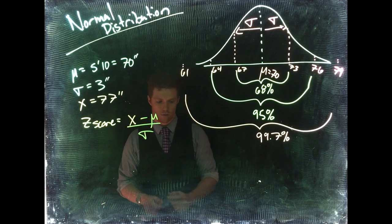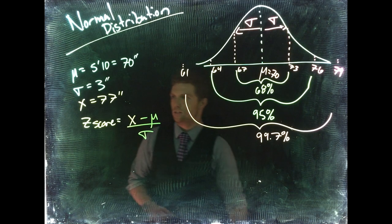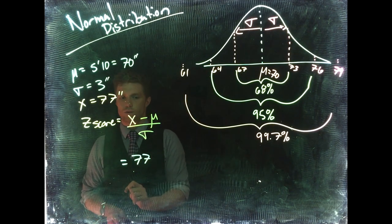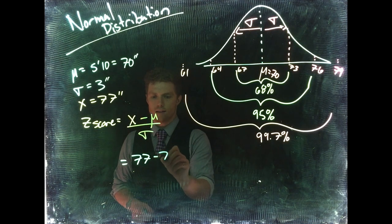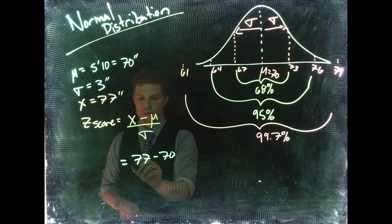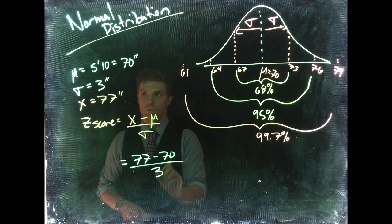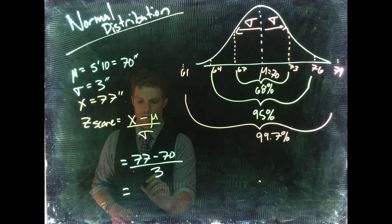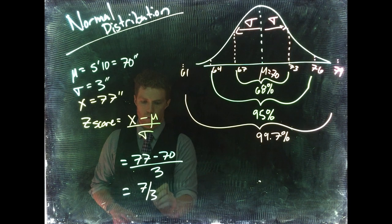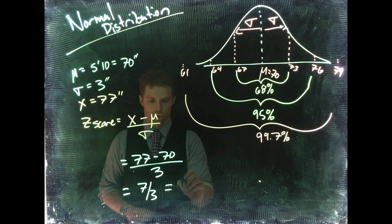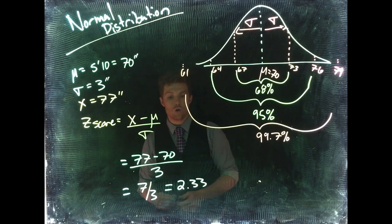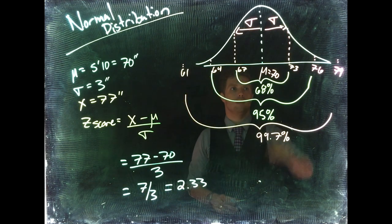The z-score tells us how many standard deviations away we are. That would be equal to x minus mu divided by sigma, the number of standard deviations away we are from the mean. So if we put this in, we could say then that 77, our 6 foot 5 guy, minus 70, the average height of men, divided by 3, our standard deviation, that would equal then 7 divided by 3, which is equal to 2.33.